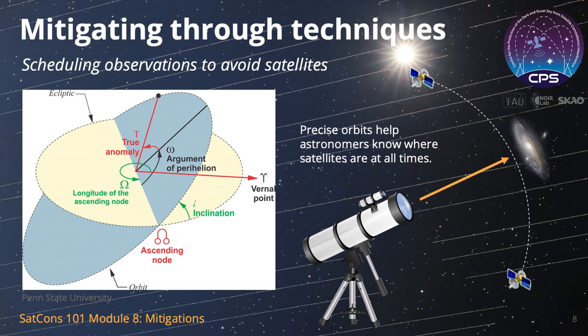But this approach will not work for every telescope. Some, such as the Rubin Observatory's survey telescope, see large parts of the night sky at once. Others use cameras that take very long exposures. And if there are many tens of thousands of satellites in orbit, this method may not be practical.